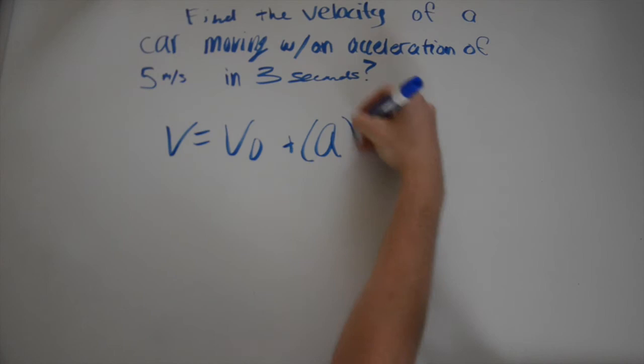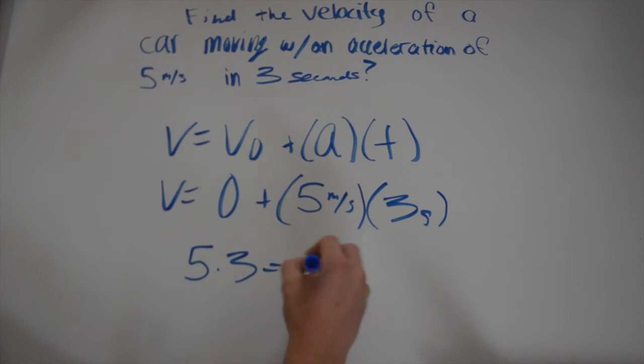Here are some practice problems. Find the velocity of a car moving with an acceleration of 5 meters per second in 3 seconds. 5 is the acceleration and 3 is the time, so if you multiply the two together you get 15 meters.